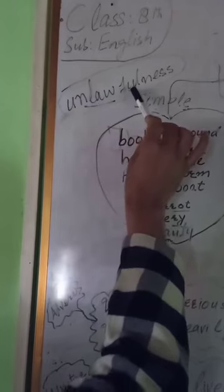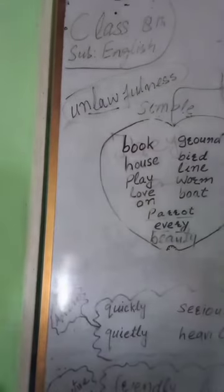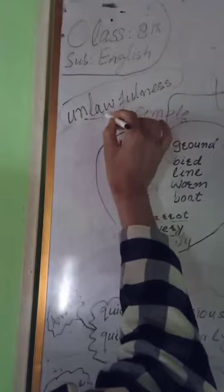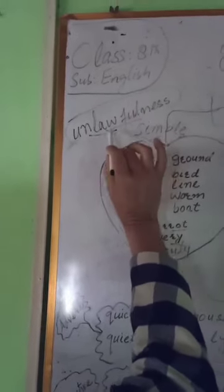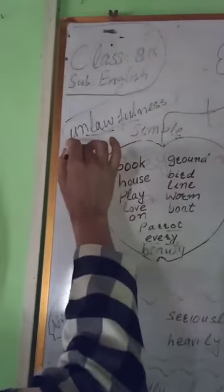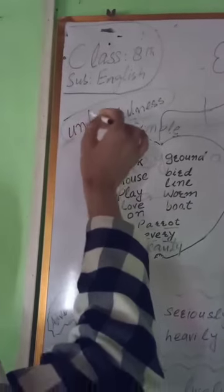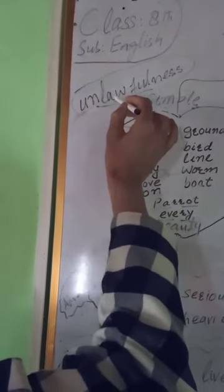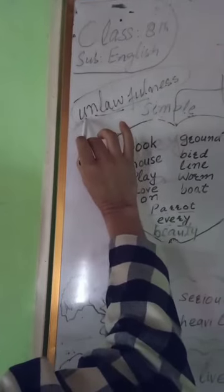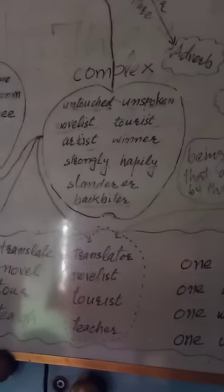We can add two or more affixes to a word. For example, 'unlawfulness' — the actual word is 'law.' Three affixes are added: two suffixes '-ful' and '-ness,' and a prefix 'un-.' First '-ful' is added to give 'lawful,' then '-ness' gives 'lawfulness,' and then the prefix 'un-' gives 'unlawfulness.' A complex word may have one or more prefixes plus one or more suffixes.